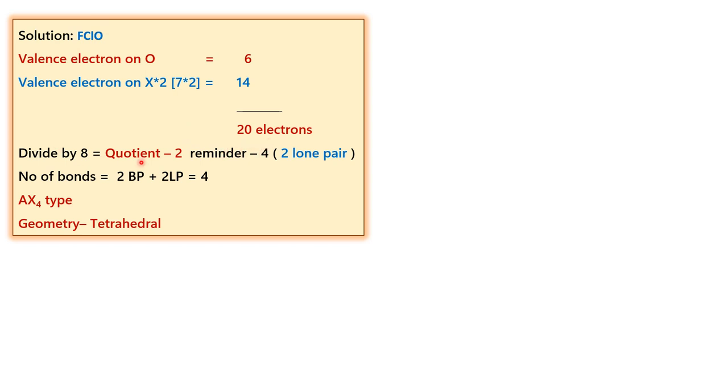When we divide it by 8, we have a quotient which is 2 and a remainder 4. When you divide the remainder by 2, you get 2 as an answer. The quotient equates to bond pairs. The remainder equates to lone pairs. So the total number of bonds is 2 plus 2, equals 4.